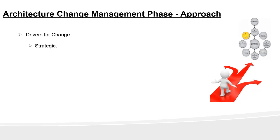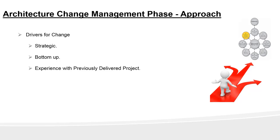Top-down changes are strategic, directed by management like the CEO or CIO down to individual departments and their respective teams, usually to enhance or create a new capability. For example, a decision to digitalize the operations of a bank is a top-down approach. Bottom-up changes are usually done to correct or enhance capability, typically for infrastructure and operations — for example, upgrading an operating system. Lastly, experience with previously delivered projects that have undergone changes becomes the reference point for future transformation projects.